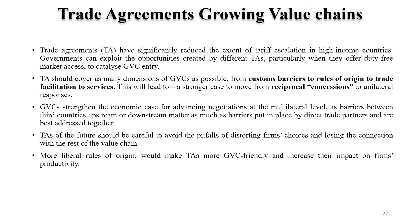Trade agreements with neighboring countries are becoming a driver for GVC. One of the most important things is negotiation on customs barriers and rules of origin, which are playing an important role to promote GVC. Easy crossing of barriers, easy rules of origin, good trade facilitation, and easy mobility are playing an important role. These areas can be taken into consideration while negotiating trade agreements, keeping in mind that the countries are trying to develop a global value chain.